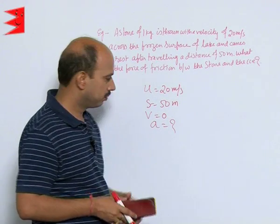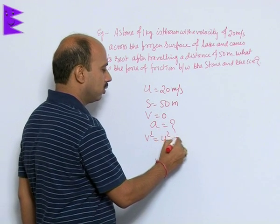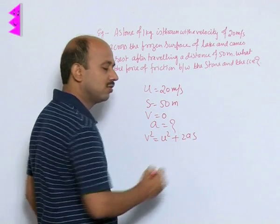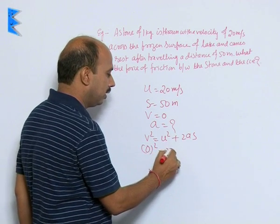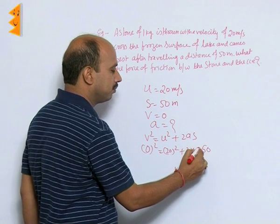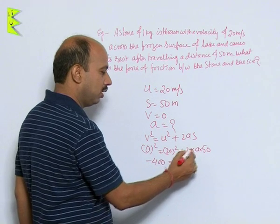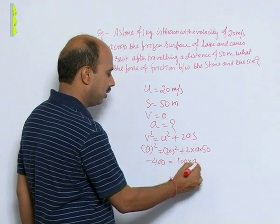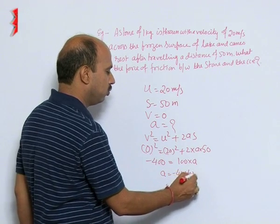So you can apply this formula, v square is equal to u square plus 2 a s. 0 square is equal to 20 square plus 2 into a into 50. So we can write minus 400 is equal to 100 into a, so a is equal to minus 4 meter per second square.